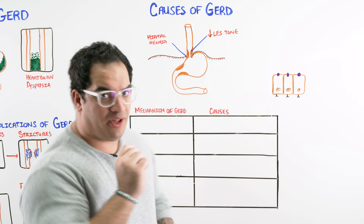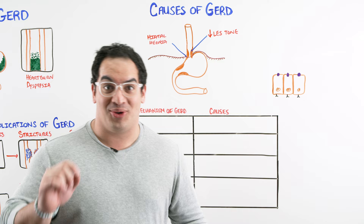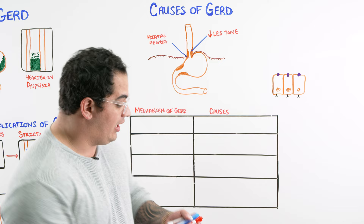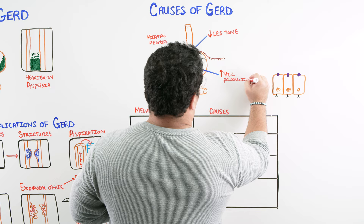The third problem is increased hydrochloric acid production. If you have hydrochloric acid going up into the esophagus, it will burn it — but if you have a lot more hydrochloric acid, you'll likely cause more symptoms. The more hydrochloric acid, the more severe the GERD can be. So another mechanism is cells of the stomach producing excessive hydrochloric acid.